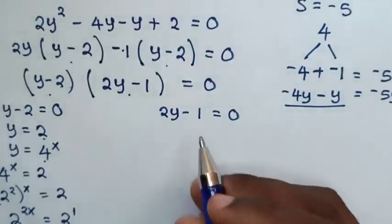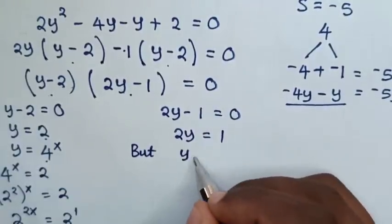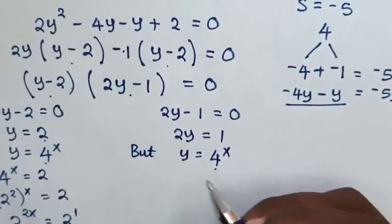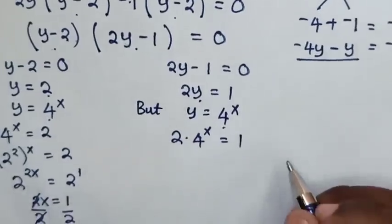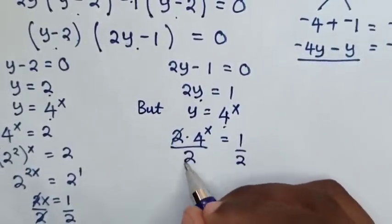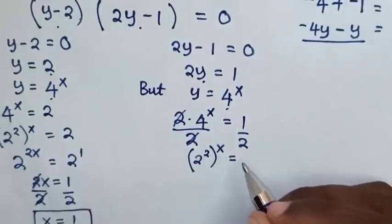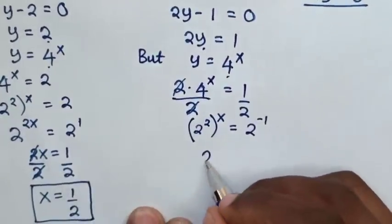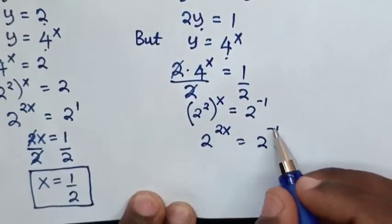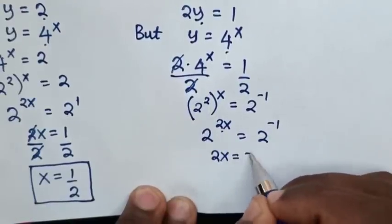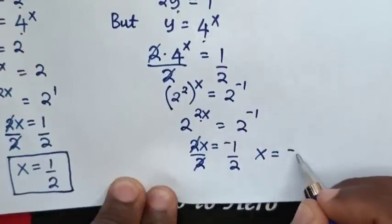For the second solution, 2y equals 1, so y equals one half. Substituting y equals 4 power x: 2 times 4 power x equals 1, then dividing by 2 gives 4 power x equals one half. Writing 4 as 2 squared: 2 power 2x equals 2 power negative 1. Since the bases are the same, we compare powers: 2x equals negative 1, so dividing by 2, x equals negative one half.